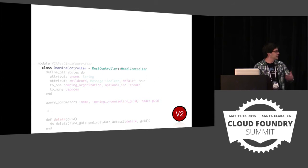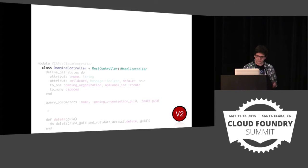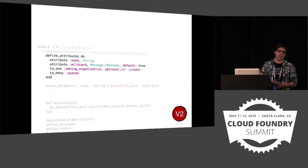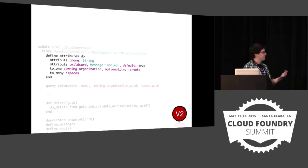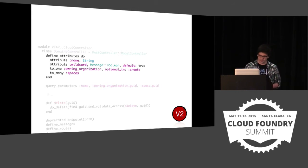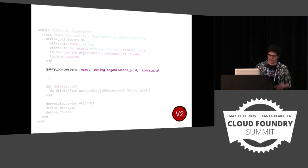The domains controller inherits from model controller. Model controller is really where everything gets implemented — it's the secret sauce of V2, and that's what we mean when we say we have shared code between all the V2 controllers. We define all the attributes the API is going to accept and return. In this case, they have to be columns in the database — they're just mappings from the database to the API. We also do the same for relations: to-one and to-many. Those are database relations the domains model has. Then we have query parameters for filtering.